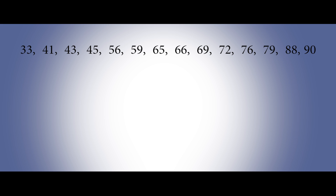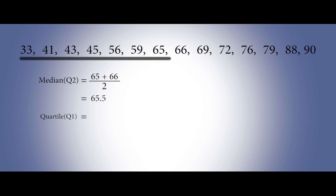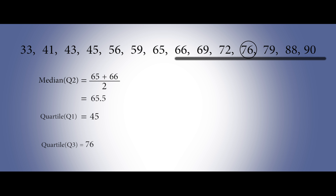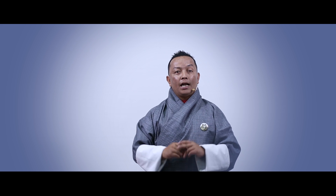It is very easy to find the median Q2 if the data collected is odd. For example, here we have taken 13 data points. But how about if the set of data is an even number — say 14? How are you going to find Q1, Q2, and Q3? First, find Q2, the median. For even data, take the two central values — 65 and 66 — and divide by 2. That becomes the median or Q2. For Q1, take the first half of 7 data points; the middle value, 45, would be Q1. Similarly, the middle value of the upper 7 data points would be Q3, which is 76.